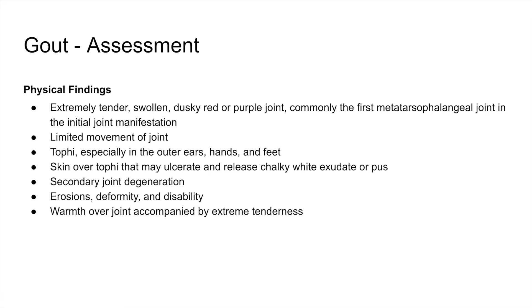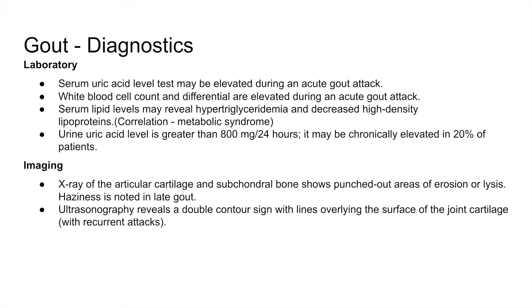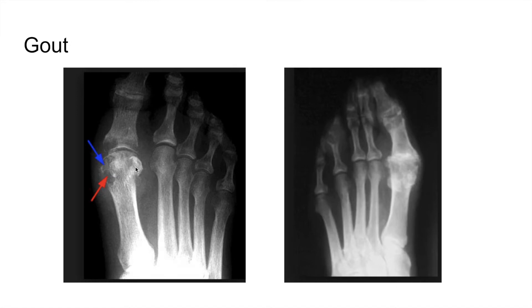In advanced gout, tophi formation appears in the fingers and ears. Diagnostic lab results show elevated uric acid levels, especially during an acute attack. White blood cells and differentials are elevated. Serum lipid levels are high due to metabolic syndrome association. Uric acid may be chronically elevated in 20% of patients. On x-ray, articular cartilage and subchondral bone show punched-out areas of erosion or lysis. Ultrasonography reveals a double contour sign with lines overlaying the joint cartilage surface, especially with recurrent attacks.